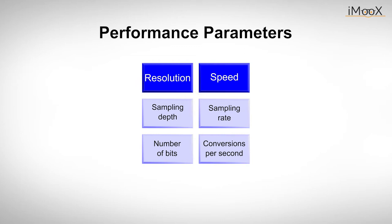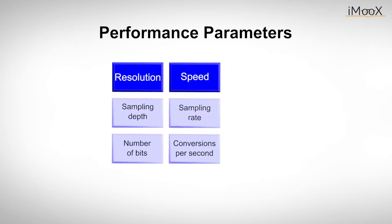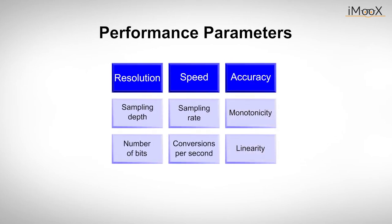In datasheets those parameters are typically denoted as the sampling depth, which gives us the number of bits at the output, and the sampling rate, which gives us the number of conversions per second. Depending on the application, one might also be interested in the accuracy. Especially monotonicity and linearity are of great importance, as we have discussed in our last video.